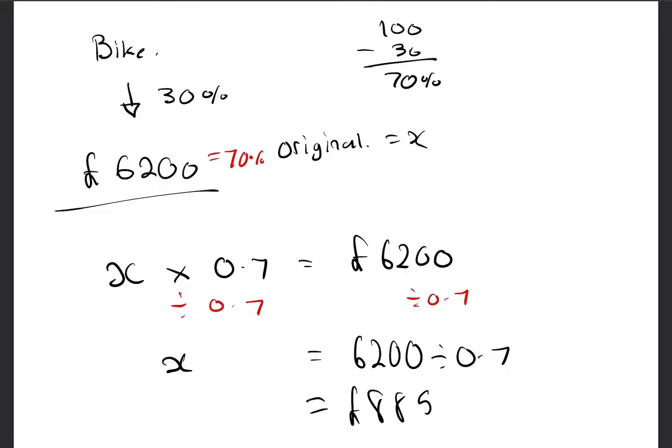And that, my original value of my bike, is £8,857.14 to two decimal places.